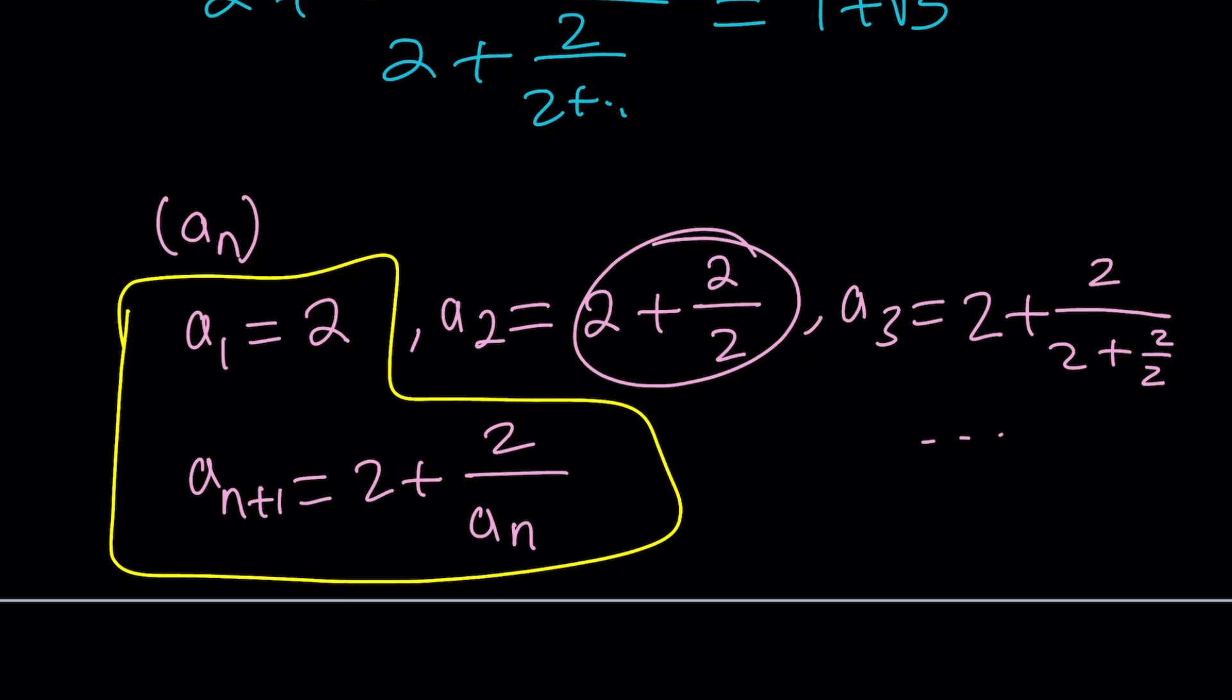And by listing all these terms as a sequence, if the sequence has a limit, then that limit is going to be the value of our expression. So that's how it's defined.